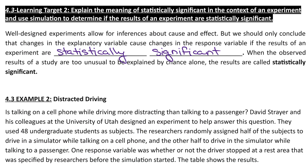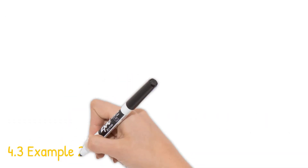Now let's move on to our second learning target, focusing on statistical significance. Statistical significance is what we're going to spend our whole second semester on. When we have a well-designed experiment, this allows us to make inferences about cause and effect. But we should only conclude that changes in the explanatory variable cause changes in the response variable if we see statistically significant results — that is, results that are too unusual to be explained by chance alone.